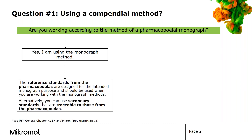If you are using the monograph method, the best choice would be the reference standard from the corresponding pharmacopoeia, because it is designed for that special use. Alternatively, you can use a secondary reference standard that has been established by comparison to the pharmacopoeia reference standard.